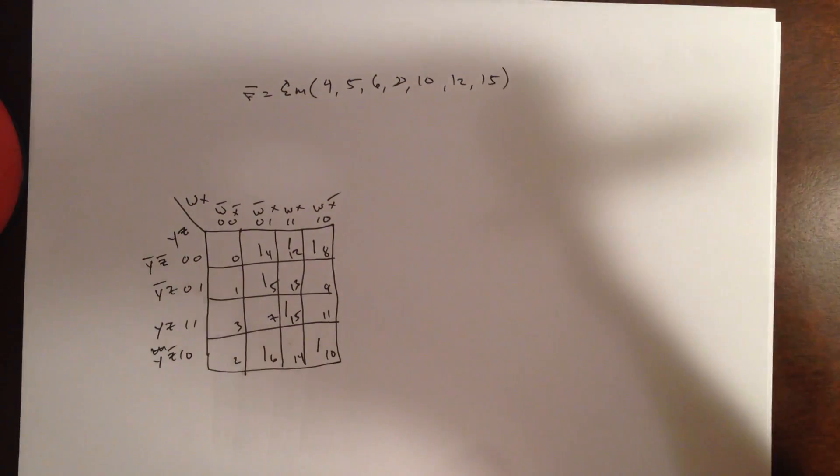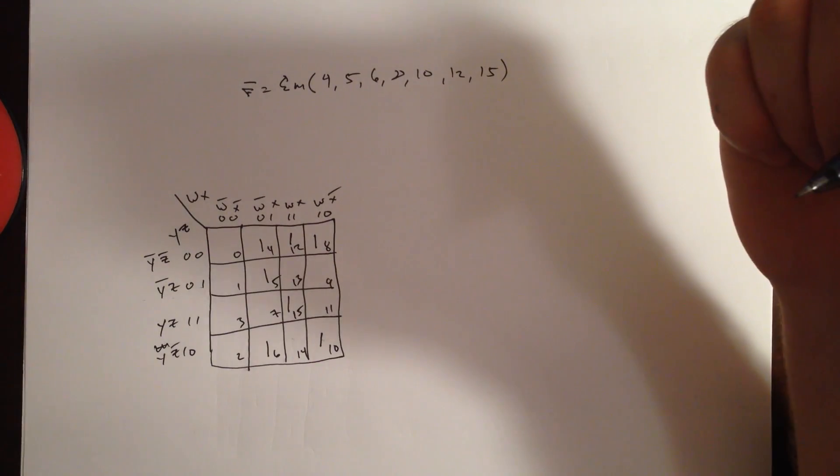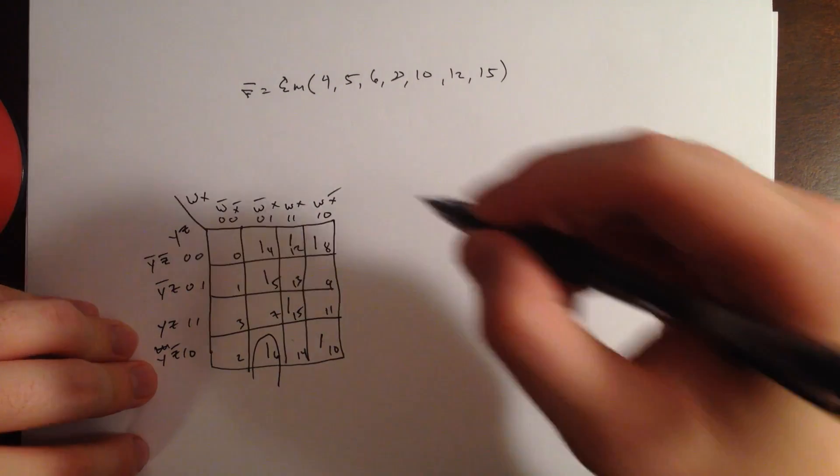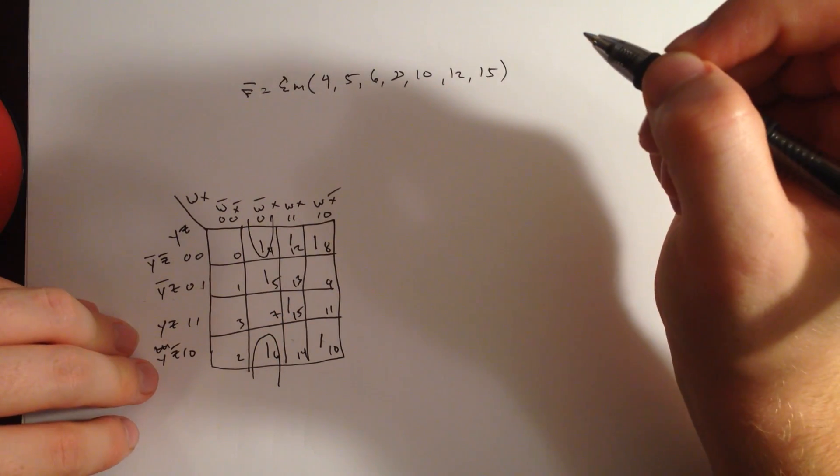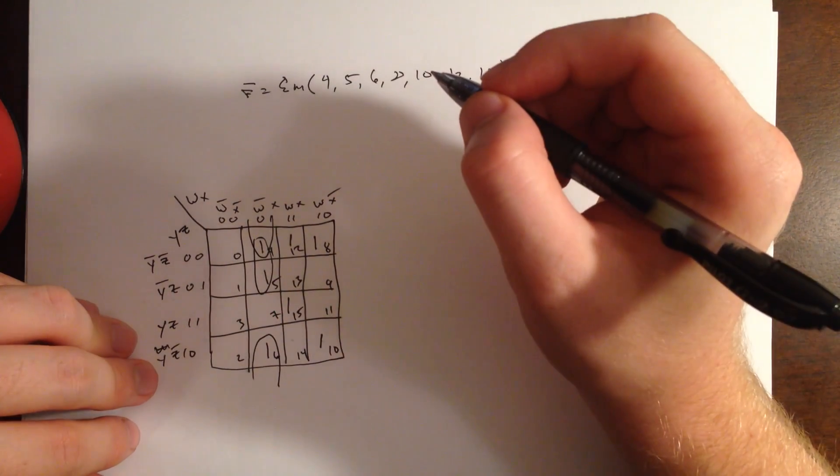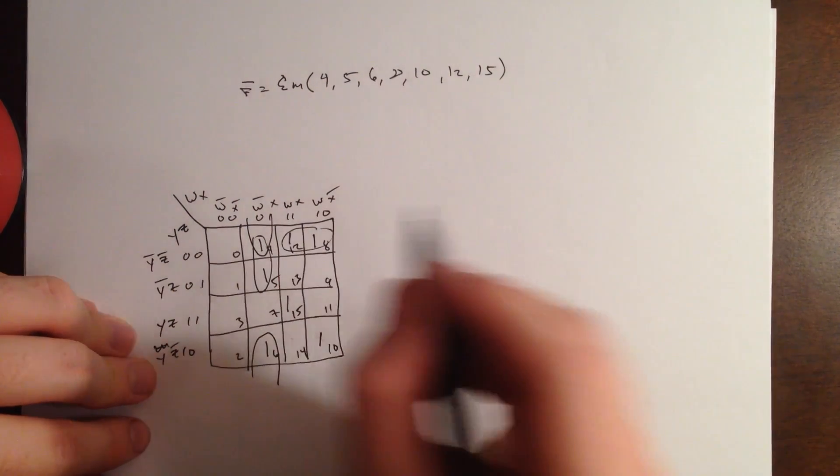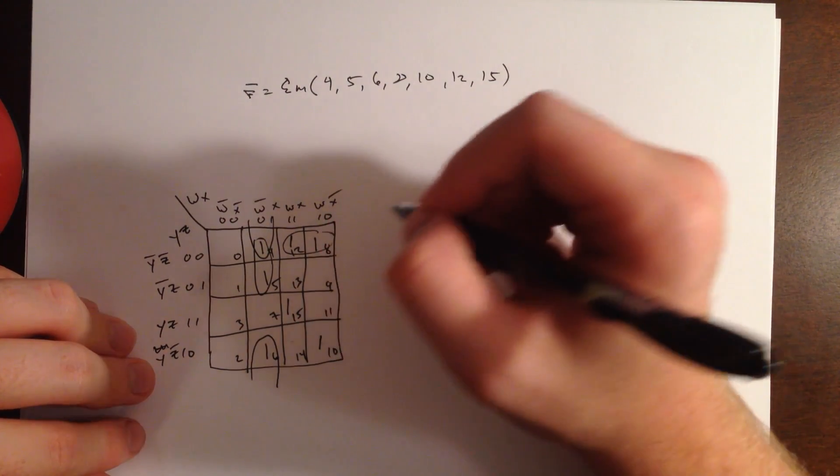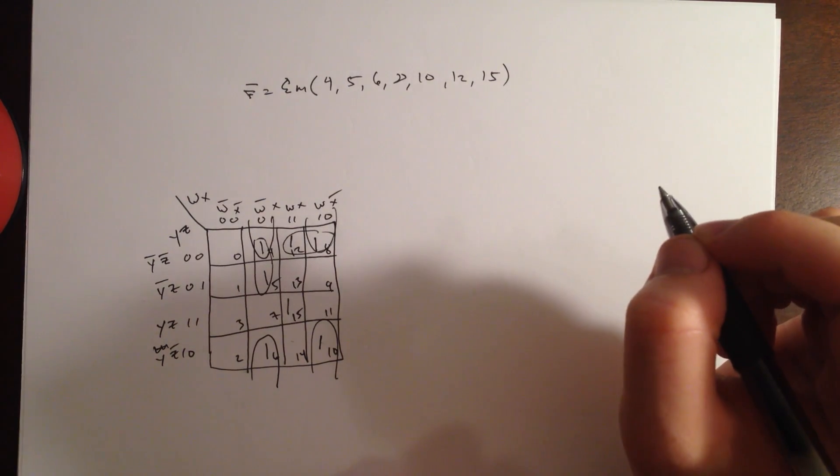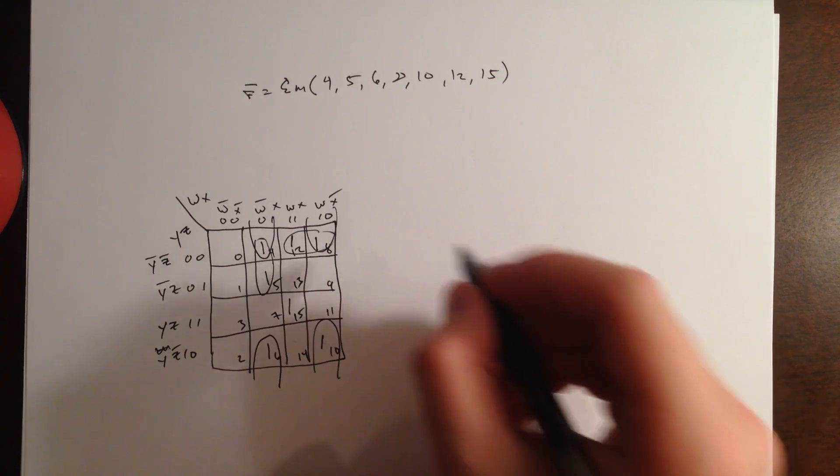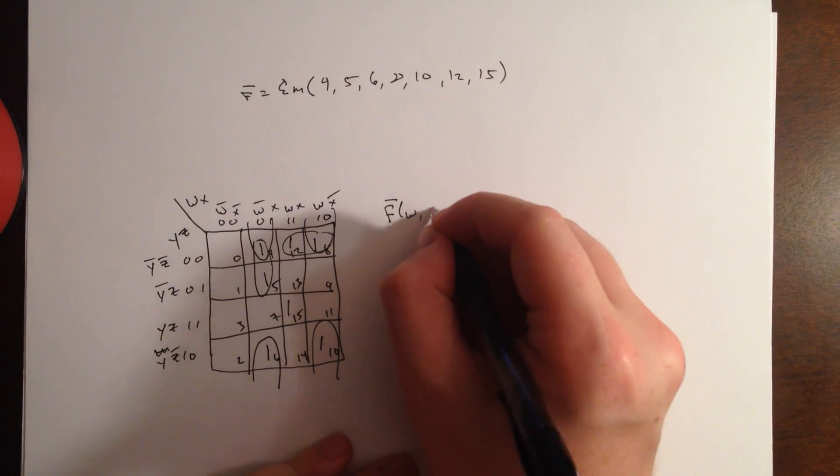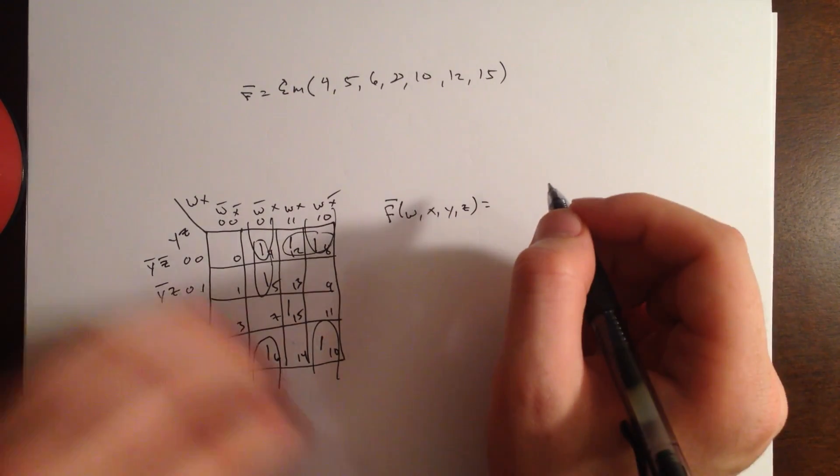Go ahead and circle all these. And we don't have groups of 4s, so I'm going to have to start circling groups of 2. It looks like these two are together. Looks like these two are together. These two are together. And these two are together.